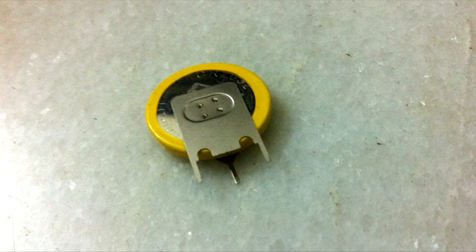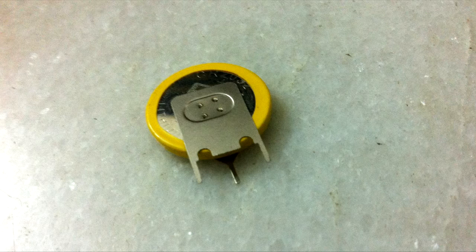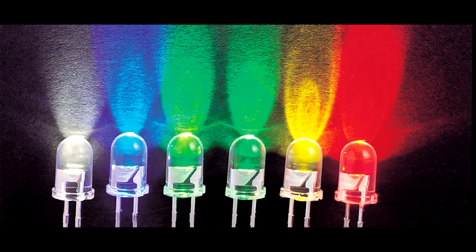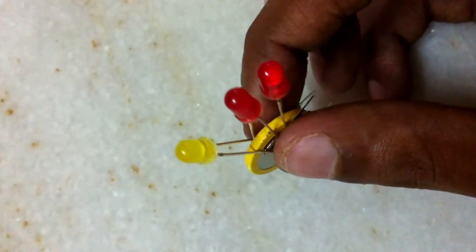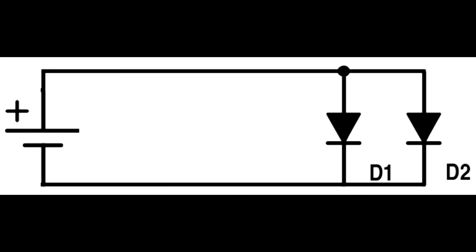We use the button cell because it is very small in size and lighter in weight. If we need more light we can use super bright LEDs. Check if the battery is able to power all the LEDs at once so that we can connect multiple LEDs in parallel.